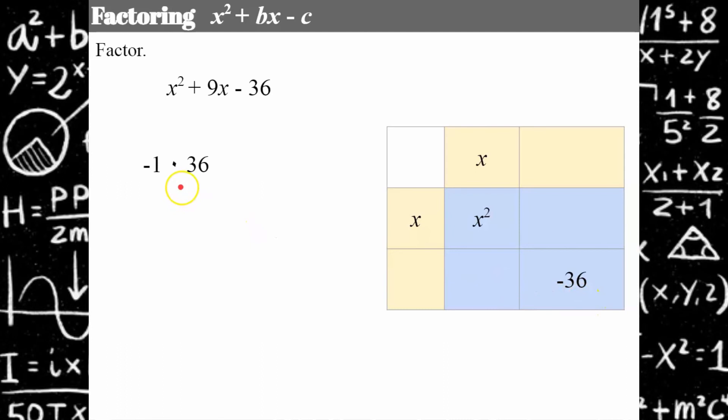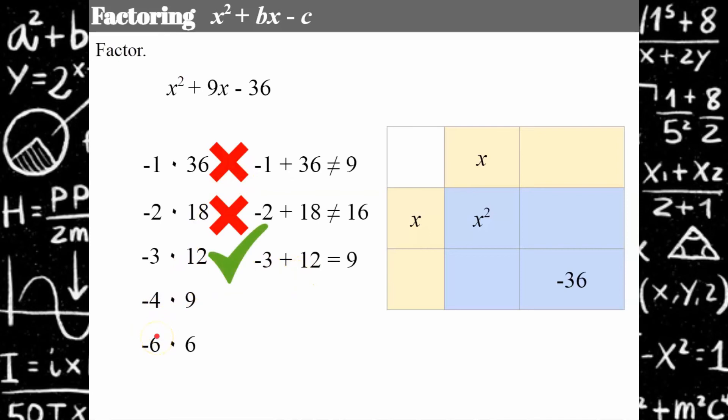I'm going to write all my pairs of factors that equal negative 36: negative 1 times 36, negative 2 times 18, negative 3 times 12, negative 4 times 9, and negative 6 times 6. Notice that I put the smaller value to be negative because I know it has to be in order to get this to be positive. So I'm going to check. Negative 1 plus 36 does not equal 9. Negative 2 plus 18 does not equal 9. Negative 3 plus 12 does equal 9, so I don't even need to check the other pairs.